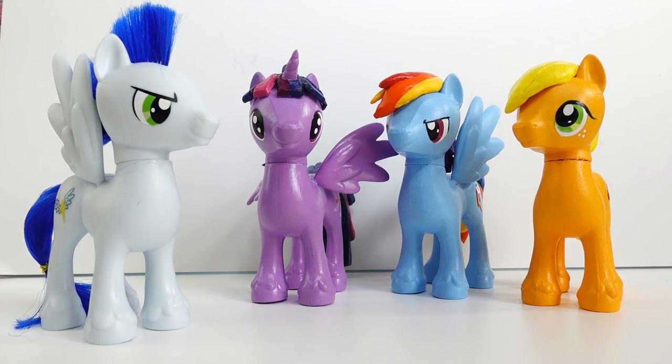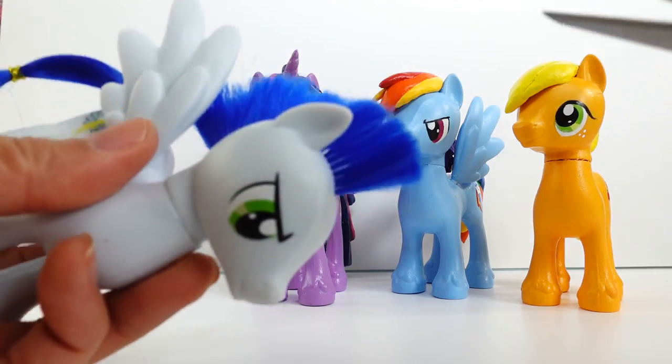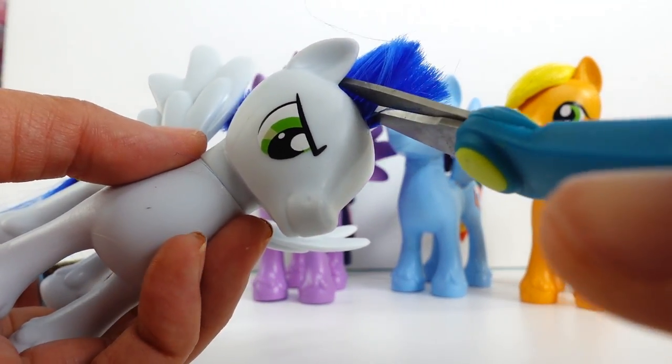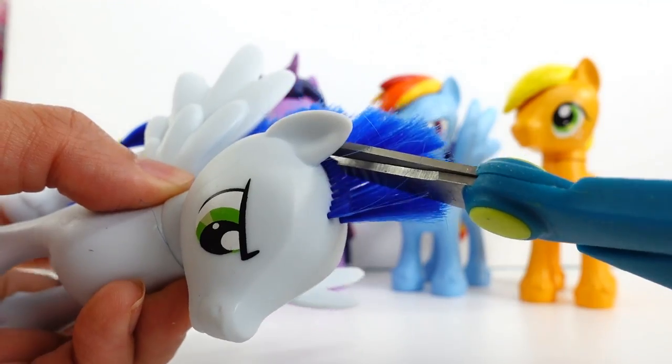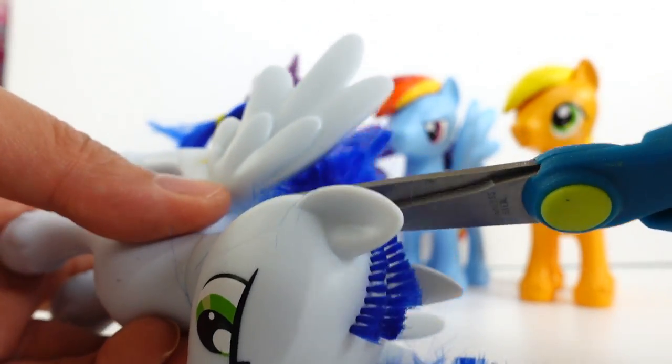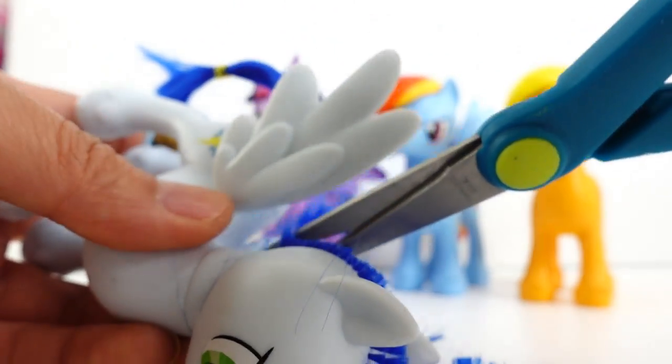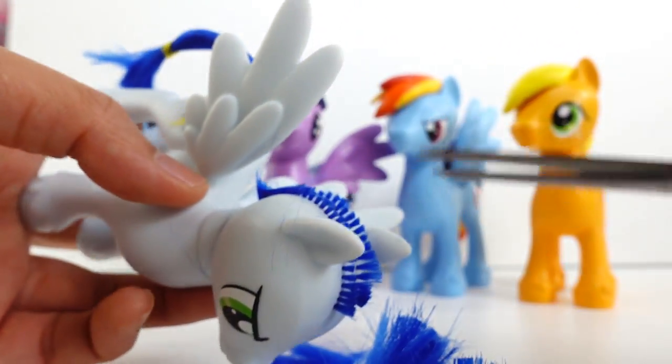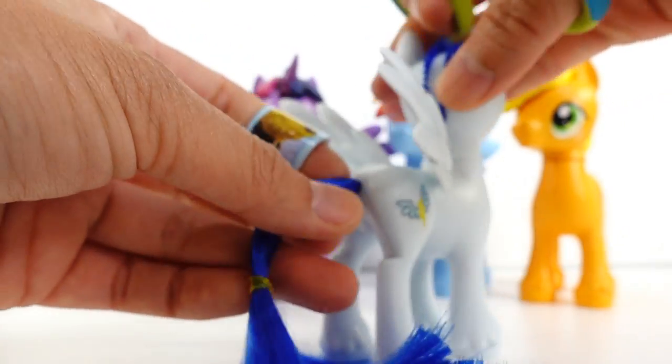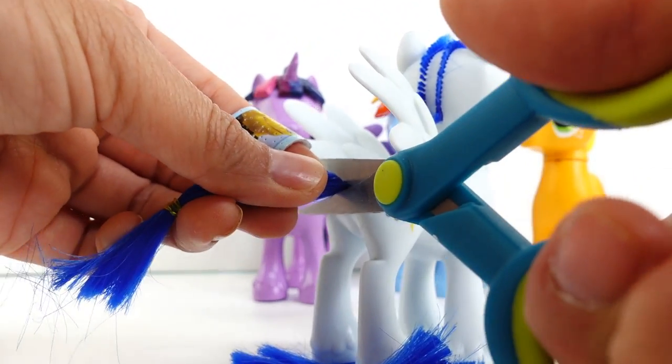Let's get started. The first thing we're going to do is cut off his mane. And if you have not yet checked out Rainbow Dash, Twilight Sparkle, and Applejack transformed into boys, make sure to check that out after this video. They were a lot of fun to make. Here goes the tail.